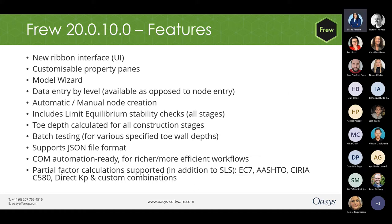Fru 20.0 supports JSON file format and is COM automation ready for richer and more efficient workflows. It also allows you to apply partial factor calculations in Eurocode 7, AASHTO, or Syria, or use custom combinations if required.